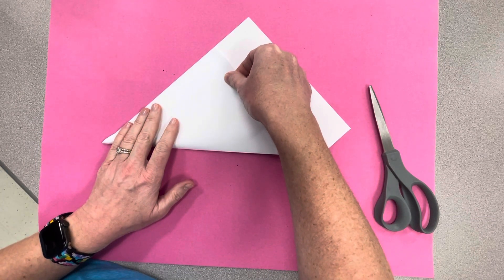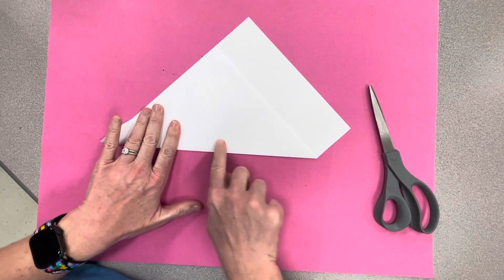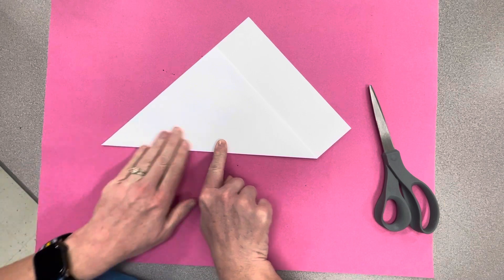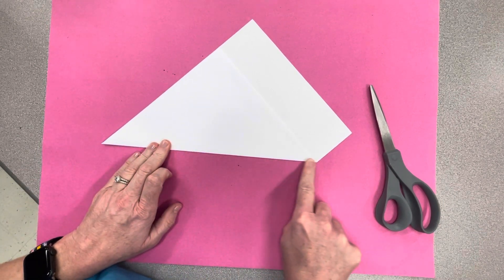Make sure that your edges are lined up all the way across. There we go. So now I have a nice point on this end. I didn't a minute ago, it was kind of squared off.